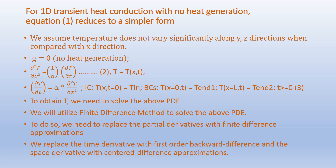To solve this partial differential equation we need one initial condition and two boundary conditions. The initial condition is T(x, t=0) = T_in1. The boundary conditions are T(x=0) = T_in1 for all times, and T(x=L) = T_in2 for all times t ≥ 0. To obtain T we need to solve the above PDE using the finite difference method, replacing the partial derivatives with finite difference approximations — specifically a first-order backward difference for time and a centered difference approximation for space.